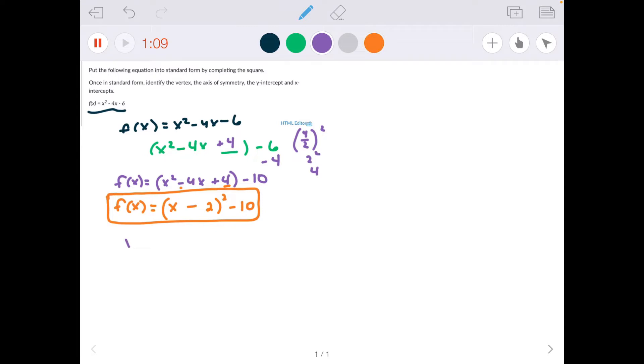Then from here I want to do the vertex. So I do the opposite of what follows x, which would be 2, comma what follows y with the sign, so it's negative 10. The axis of symmetry is x = 2, and I get that from the x-coordinate of my vertex.